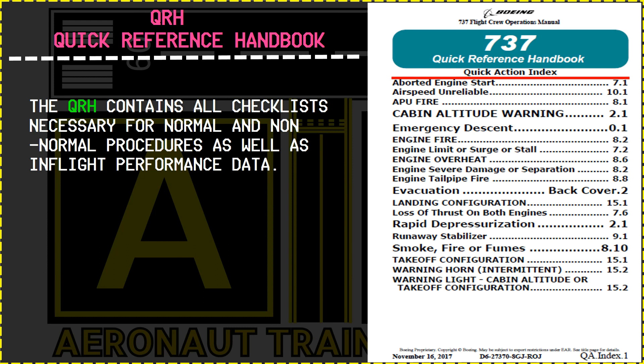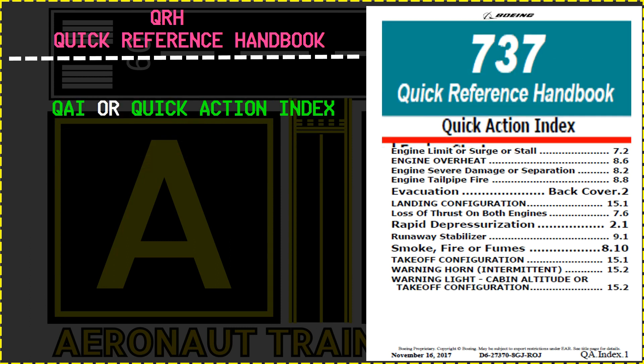The QRH contains all checklists necessary for normal and non-normal procedures as well as in-flight performance data. On the front page, we have something named QAI or Quick Action Index, which covers all the very serious situations in checklists. These are also memory items. After you have completed any applicable memory items, you would use this QAI to access the checklist very quickly.